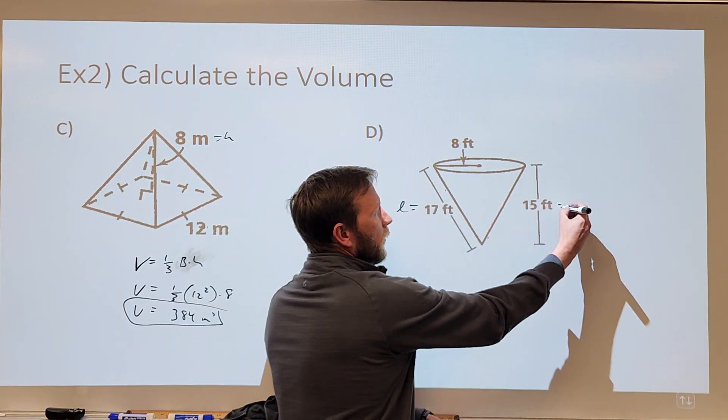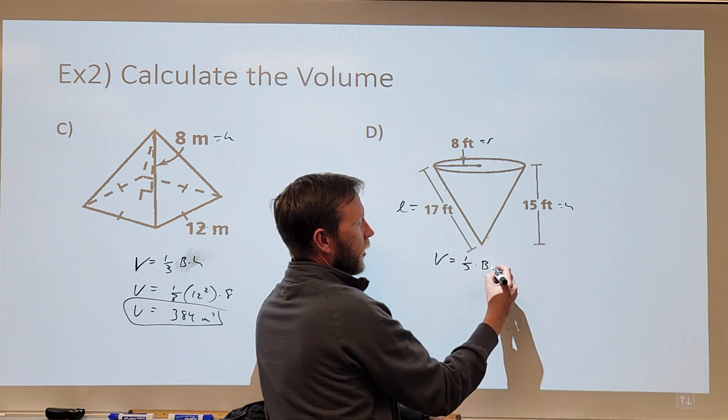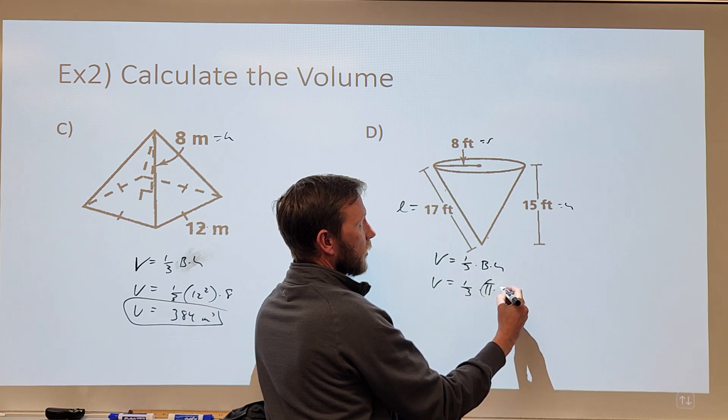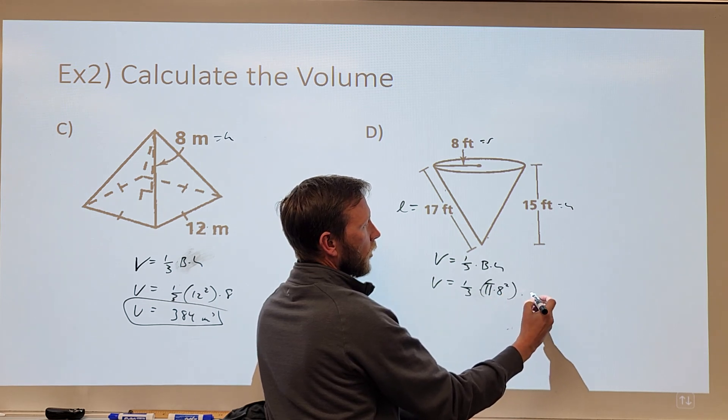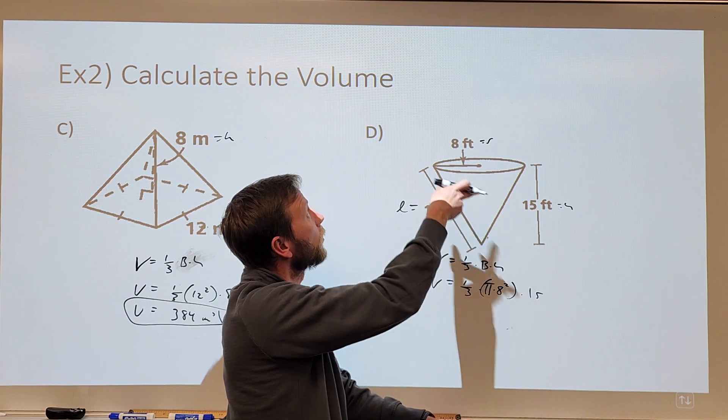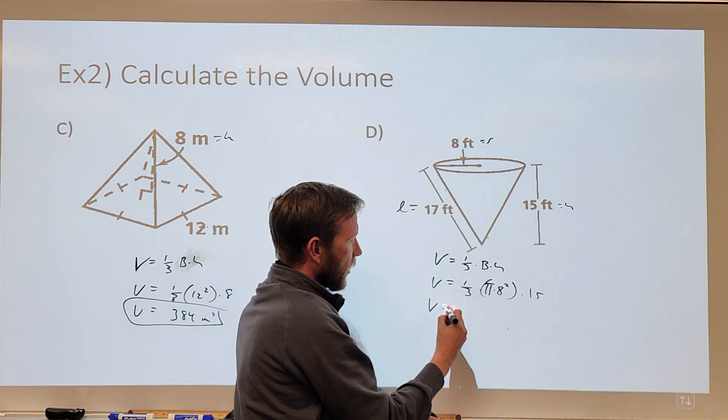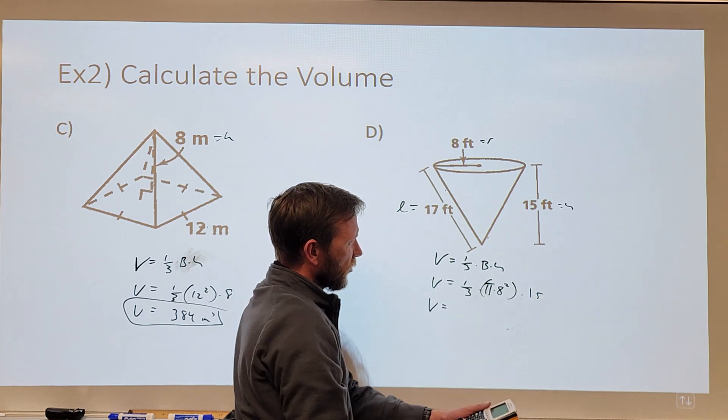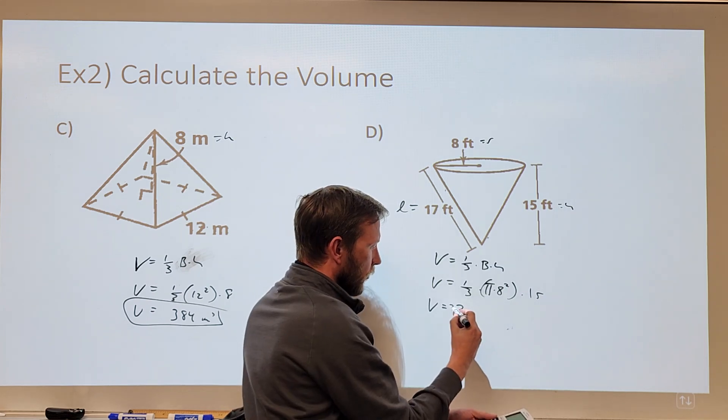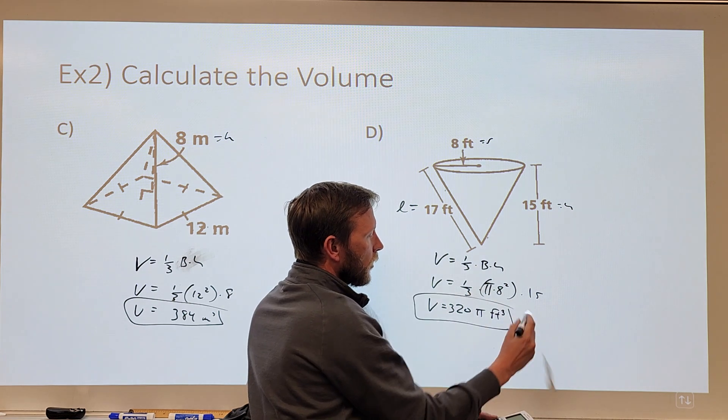This is L, this is H, this is R. So the volume, again, is one-third times the area of the base times the height. We know the area of the base is found by taking pi times our radius squared. Our height here is 15. The 17 is not relevant to this situation when we're finding the volume. One-third of 15 is 5. 5 times 64 is 320 pi cubic feet.